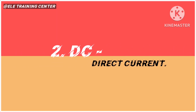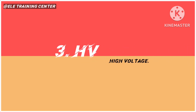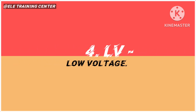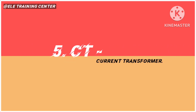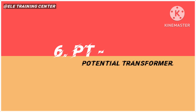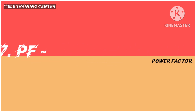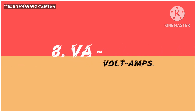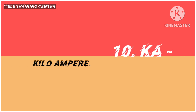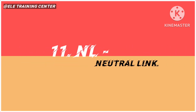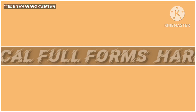Medium level electrical full forms: 1. AC - alternating current. 2. DC - direct current. 3. HV - high voltage. 4. LV - low voltage. 5. CT - current transformer. 6. PT - potential transformer. 7. PF - power factor. 8. VA - volt amps. 9. KV - kilovolt. 10. KA - kilo ampere. 11. NL - neutral link.